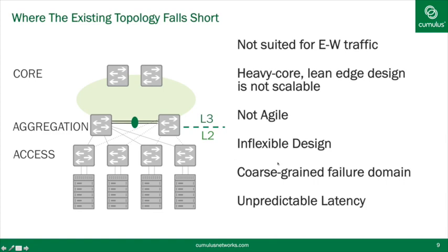The next problem is the coarse-grained failure domain. With only two big boxes, the redundancy is just dual redundancy — if one network goes down you lose 50% of your network bandwidth. A single link going down causes that node to lose 50% of its bandwidth. That's too coarse-grained for modern data center builders. And there is also unpredictable latency: if traffic stays within a single Layer 2 subnet things work one way, but if it crosses into the core the topology is not exactly well-defined and you can run into unpredictable latency issues.